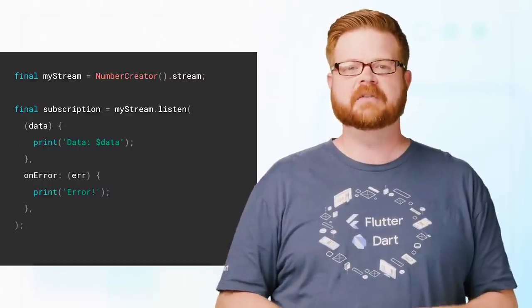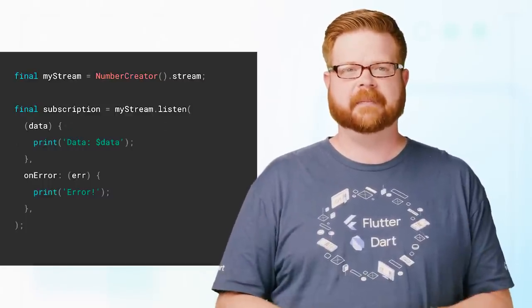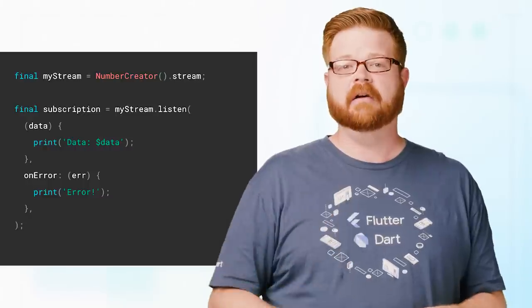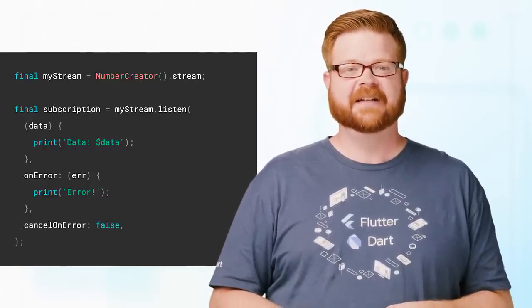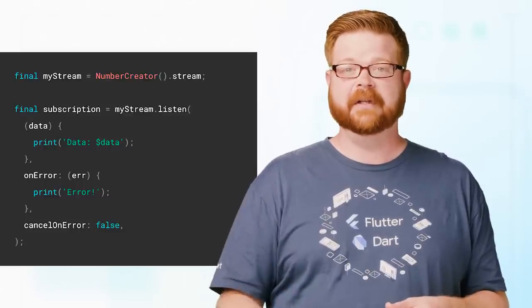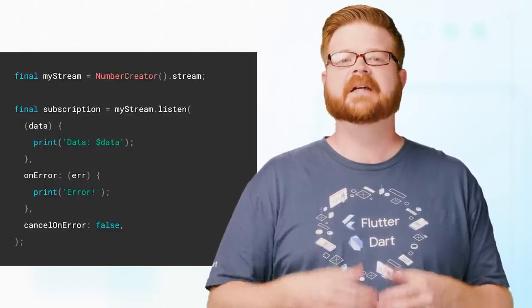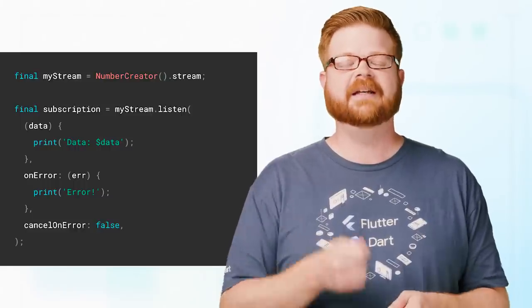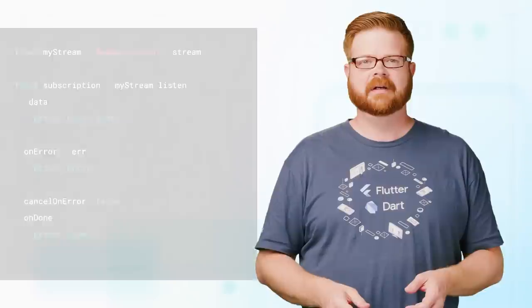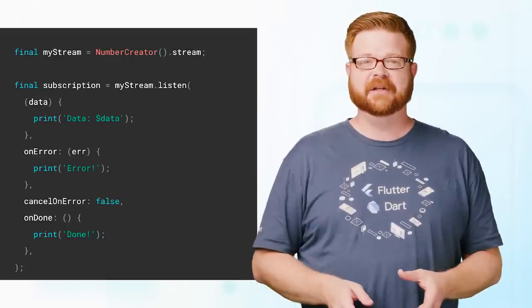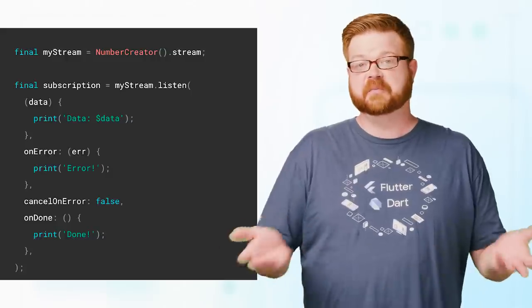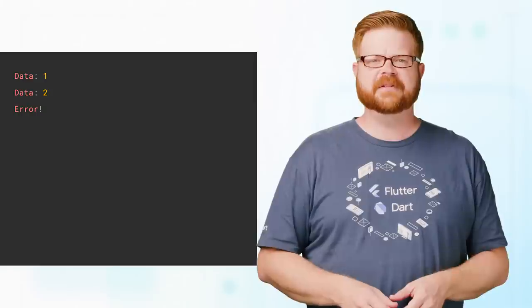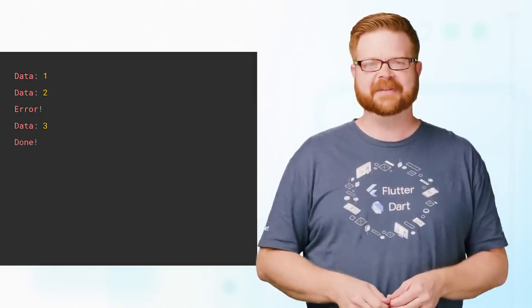I mentioned earlier that streams can produce errors just like futures can. By adding an onError method, you can catch and process any errors. There's also a cancelOnError property that's true by default, but can be set to false to keep the subscription going even after an error. And there's an onDone method you can use to execute some code when the stream is finished sending data, such as when a file has been completely read. With all four of those properties combined, you can be ready in advance for whatever happens.